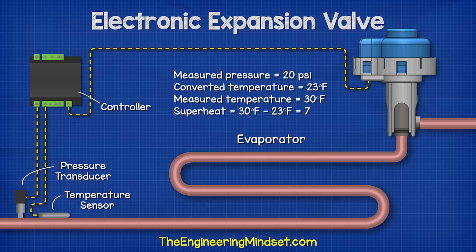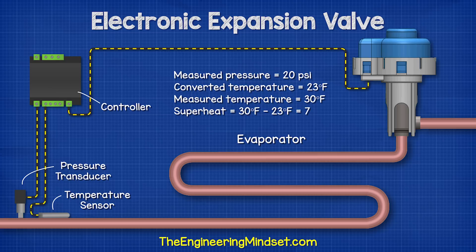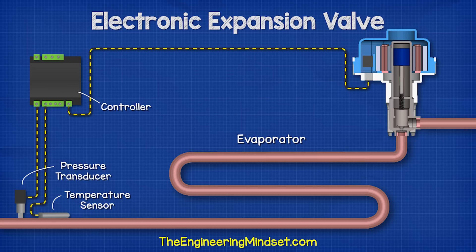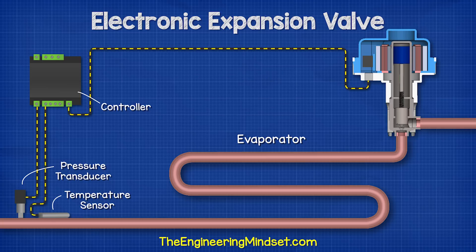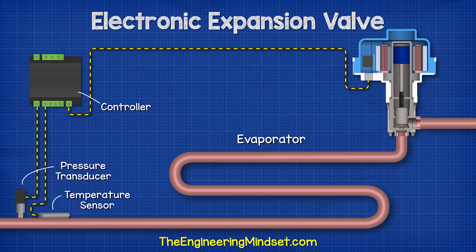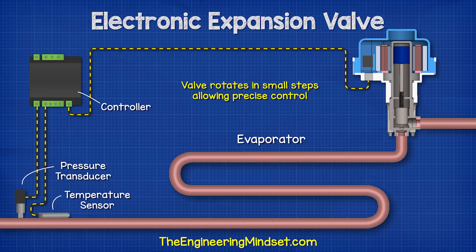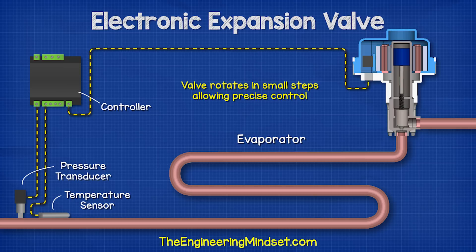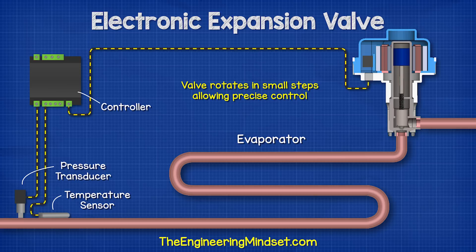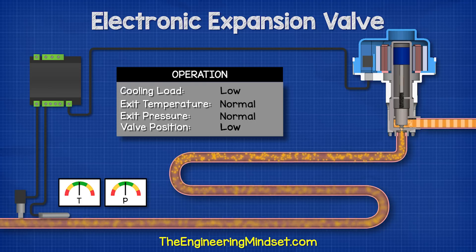The controller sends this signal to the expansion valve stepper motor to energize the coils and create the electromagnetic field. The permanent magnet's magnetic field will interact with this, which causes it to rotate either clockwise or counter-clockwise depending on the signal being sent. The signal causes the valve to rotate a very small amount which allows precise control and adjustment to the superheat.